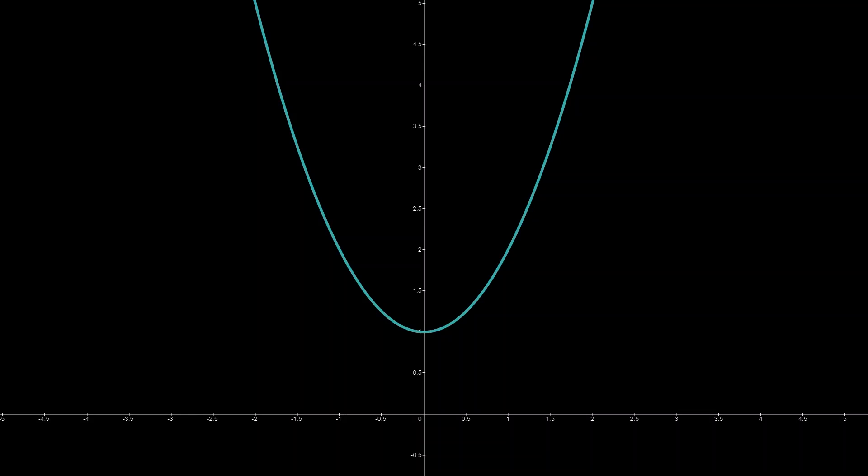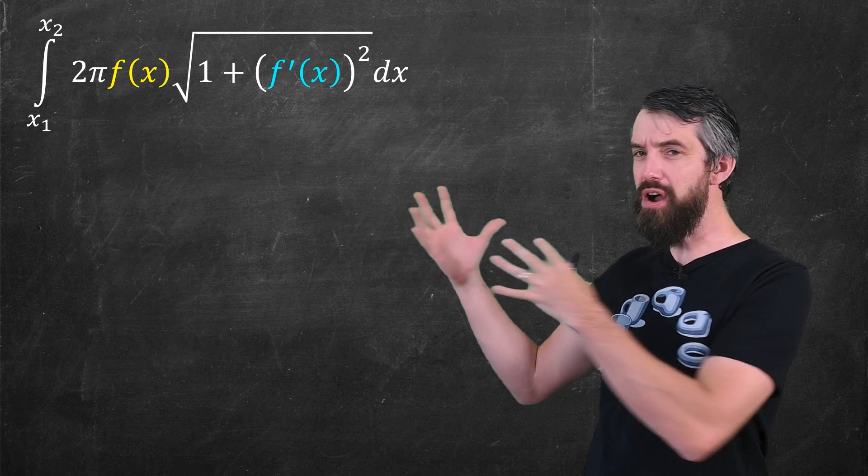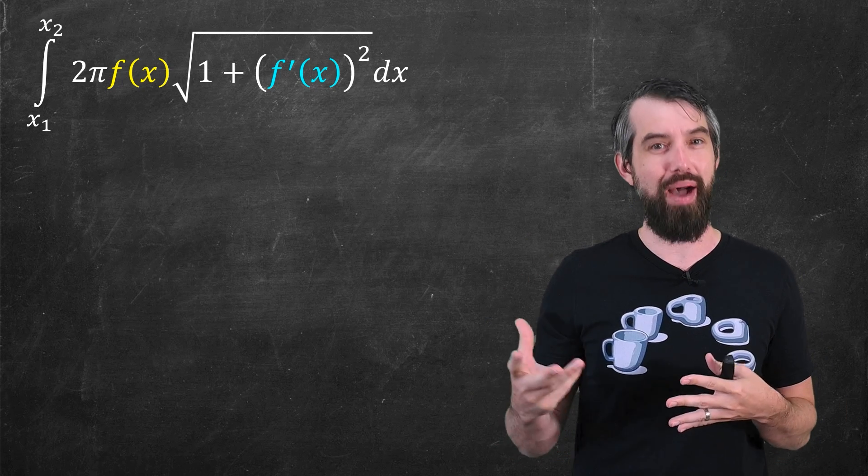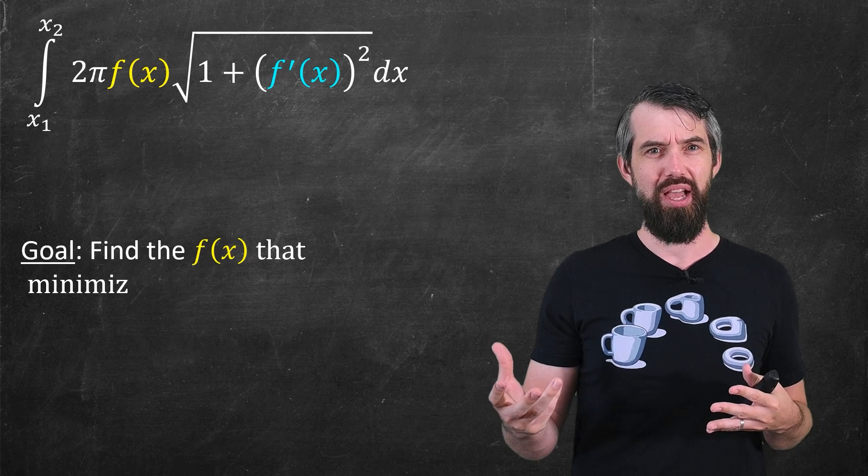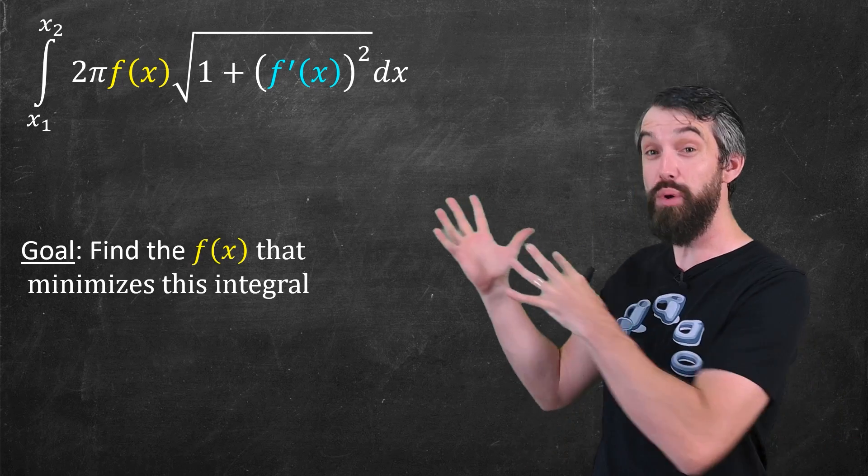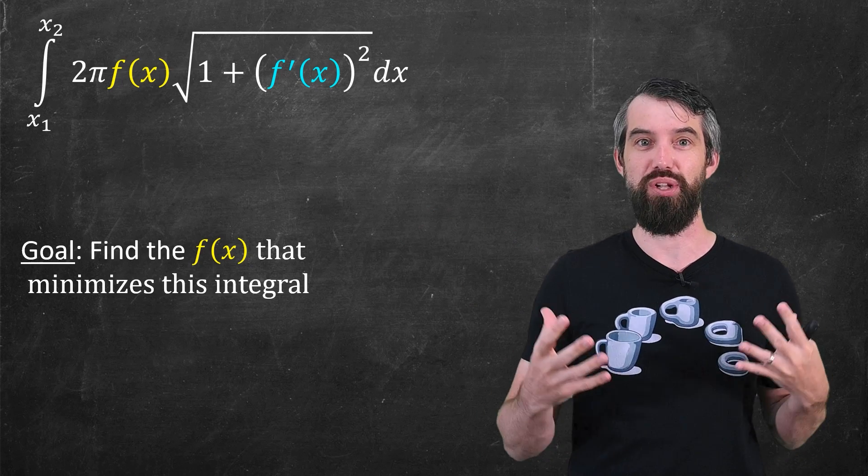In calculus, we're often given a function and then asked questions about that function, like at what point is there a minimum of that function. And we have great techniques in this setting, like taking a derivative and setting it equal to zero to find candidates to be minimums. But now that we have a functional, we have a sort of different type of minimization problem. We're trying to think not for a point, but for an entire function that's going to minimize this functional expression.